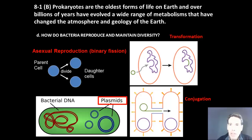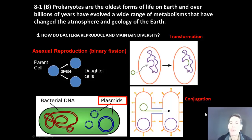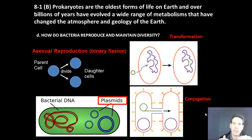Both of these cases, conjugation and transformation, are known as horizontal gene transfer, or lateral gene transfer, because the genetic information is being passed on across generations, from one living organism to another. That's very different from the way eukaryotes typically pass on genetic information, which is from one parent to the offspring to the next — parental, F1, F2 — which would be vertical transmission.